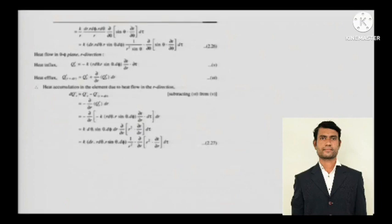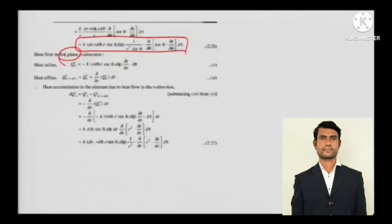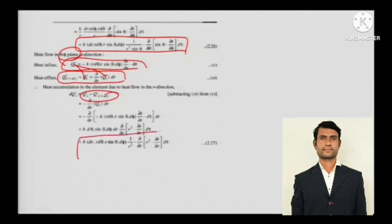Now the next thing is heat flow in theta-phi plane direction. So it will be q_r. This is the same thing, and q_r plus dr. Now apply Fourier's law here and here, and then subtract it, and finally you're gonna get this.